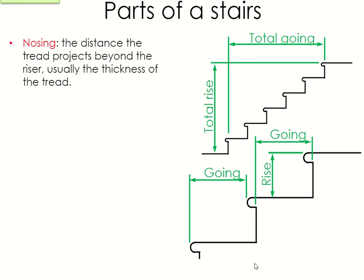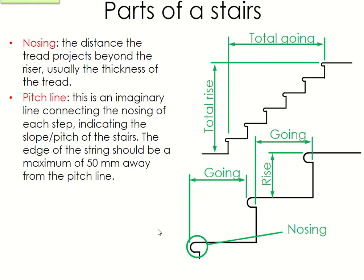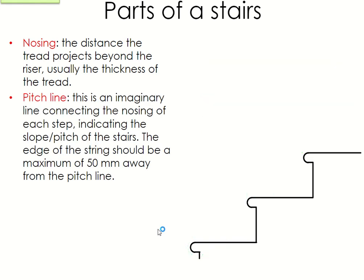F is the pitch line — but first, E was the nosing. The nosing is the distance the tread projects beyond the riser, usually equal to the thickness of the tread. So if the wood is 20mm thick, usually there will be a 20mm overlap. The pitch line is an imaginary line connecting the nosing of each step, indicating the slope or pitch of the stairs. The edge of the string should be a maximum of 50 millimetres away from the pitch line.